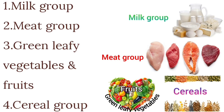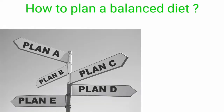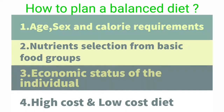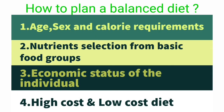A balanced diet is prepared using different food items from each of these four groups, so that different foods rich in different nutrients can contribute to the total nutritive value of the diet. When planning a balanced diet, you should consider age, sex, and calorie requirement of individuals; selection of nutrients from basic food groups; and economic status of the individual, including high-cost and low-cost diet options.